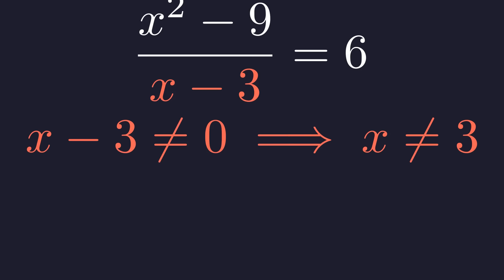So x can't equal 3. That's our forbidden value. Whatever we end up getting as a solution, it better not be 3. Keep that in the back of your mind.